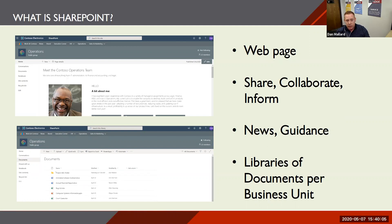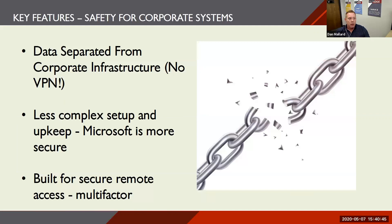SharePoint is a web page. The goal of the platform since the early 2000s is to share documents across groups of people. It's intended for collaboration, to inform people through news and guidance, and most importantly — the meat and potatoes of SharePoint — it contains libraries of documents organized per business unit in your organization. That's how people access them. This platform is intended to solve all the items we talked about on our wish list.